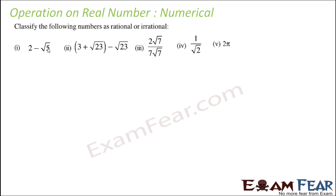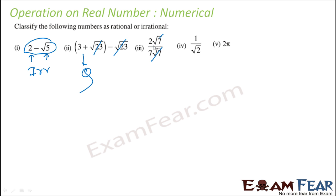We will now classify these as rational or irrational. Root 5 is irrational. When you do any operation on a rational and an irrational number, the result is always irrational. Here, root 23 over root 23 cancels and you get 3, which is a rational number. Root 7 over root 7 cancels and you get 2 by 7, which is also rational. But 1 by root 2 involves an operation on rational and irrational, so you always get irrational.